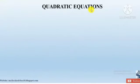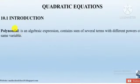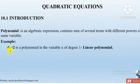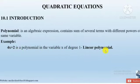Before going into our chapter on quadratic equations, let us see some introduction parts of the chapter. What is a polynomial? It is an algebraic expression containing a sum of several terms with different powers of the same variable. For example, 4x plus 2 is a polynomial in variable x and it has degree 1, so it is called a linear polynomial.